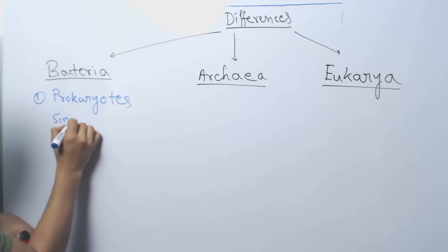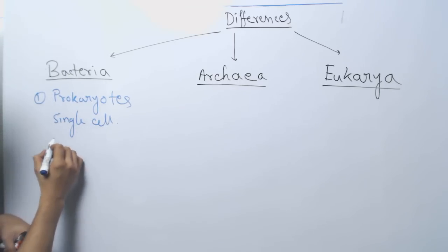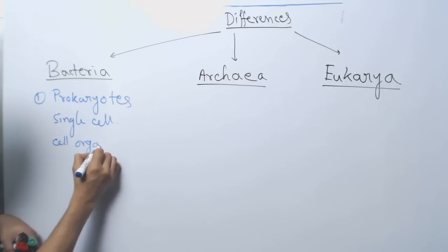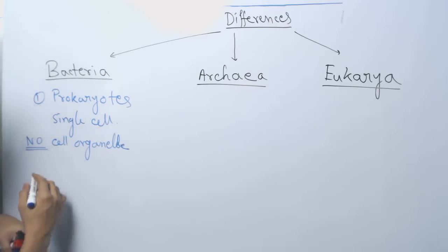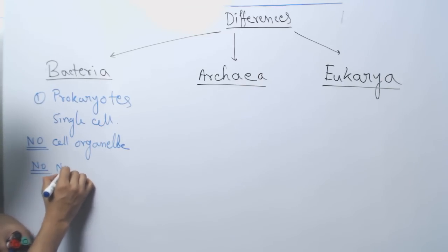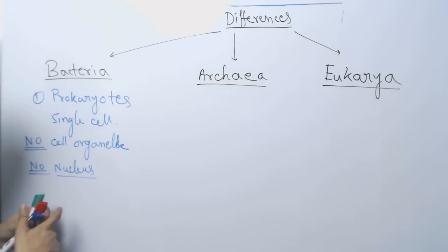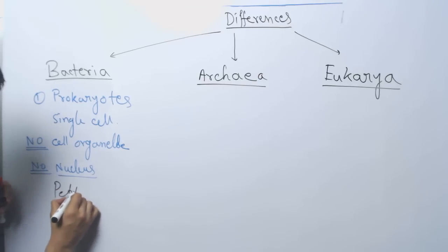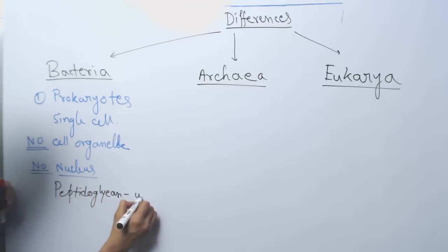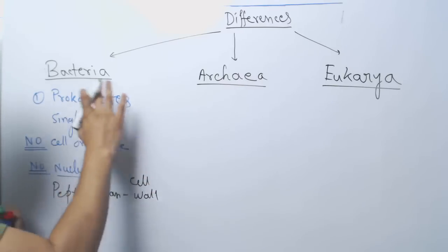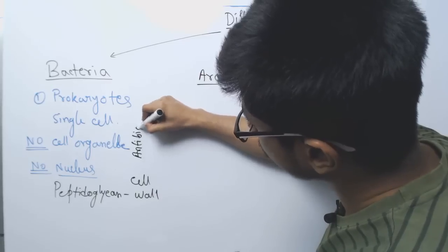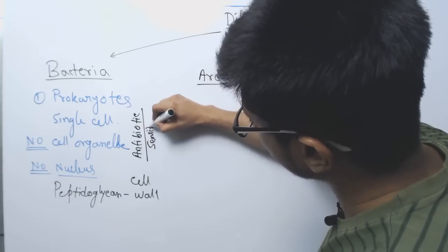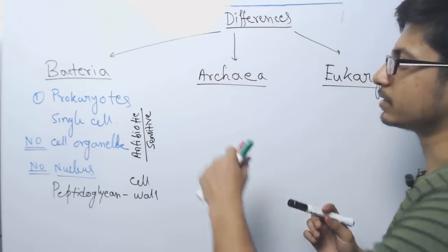They are prokaryotes, single cell organisms. They do not have any cell organelle. No cell organelle. They do not have any nucleus. And they have peptidoglycan layer in their cell wall. They are sensitive to what is known as antibiotics. This, in a sense, is the characteristic of bacteria.